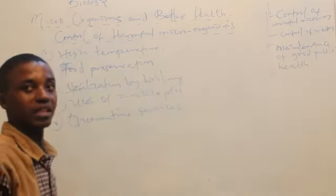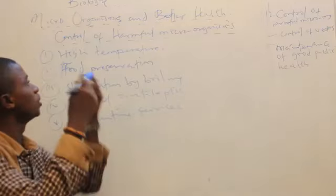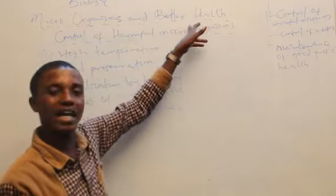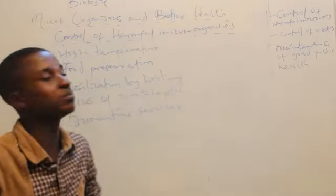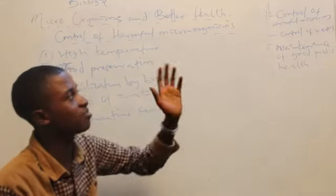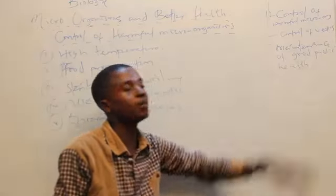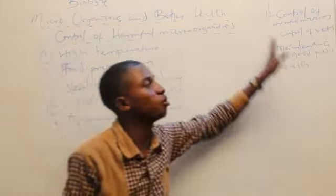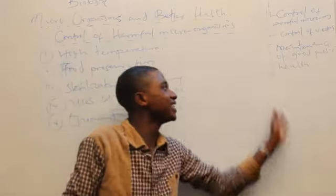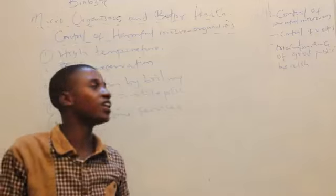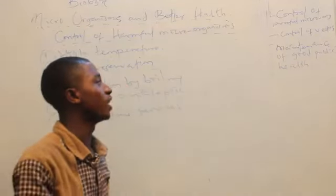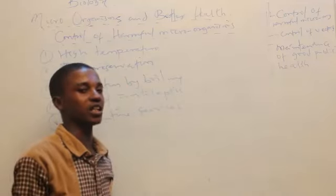For you to get better health despite the invasion of these microorganisms, there have to be control measures that we put in place. The outlines we're going to be looking at will be: control of harmful microorganisms, the control of vectors which happen to be the carriers of these microorganisms, and the maintenance of good public health. What are those agents that are responsible for making sure that there is good public health?